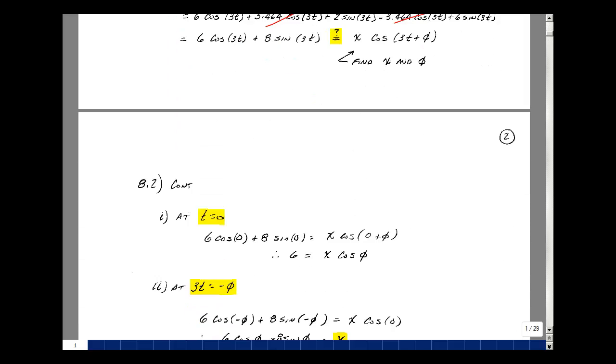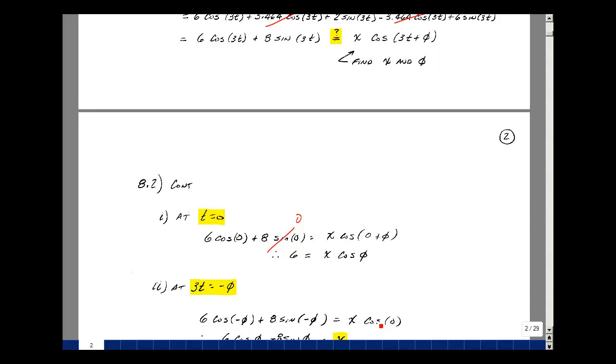We can evaluate the equation at two points and solve for x and phi. The easiest is to use t equals 0, so I have cosine of 0 times 6, sine of 0 times 8, and x times cosine of 0 plus phi. Sine of 0 is 0, so I've got 6 equals x cosine of phi. Try another point. Let 3t equal minus phi. Then I get 6 times cosine of minus phi, 8 times sine of minus phi, and cosine of 0 equals 1. So x.